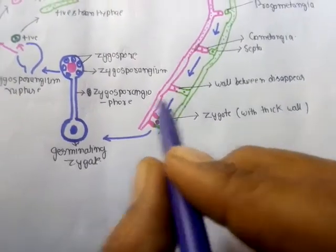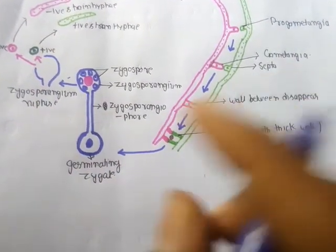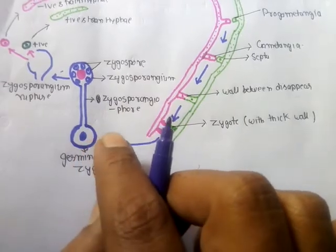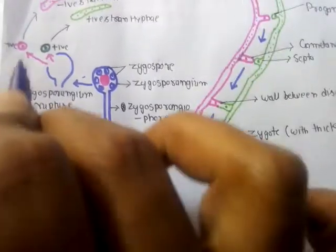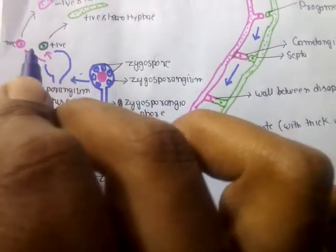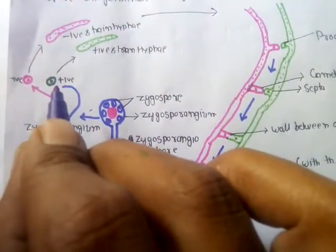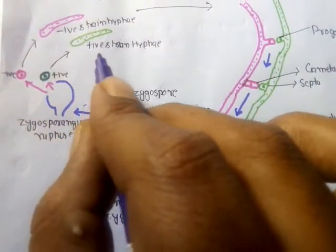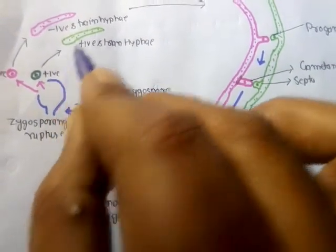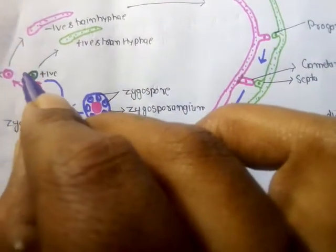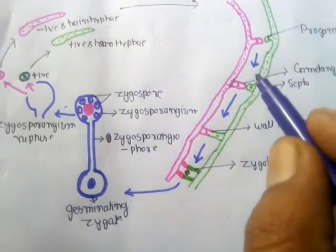Zygospores develop only when the zygosporangium matures and ruptures, releasing the spores. Because this zygote is produced by the fusion of nuclei from both positive and negative strain hyphae, 50% of the spores are of the positive strain and 50% are of the negative strain. When released, the spores travel through the air and settle on a surface. Given favorable conditions, positive strain spores develop into positive strain hyphae and negative strain spores develop into negative strain hyphae, further developing into the fungal mycelium.